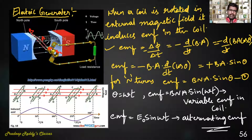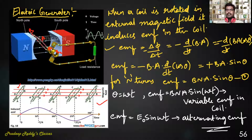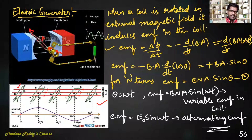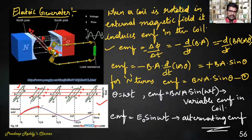You can see how the EMF is induced in the graph. Initially the coil is placed vertically, starting from zero angle, so EMF is zero. When rotated by one quarter, EMF is induced and increases. In the next quarter, side BA comes down and the EMF induced is in the opposite direction, so it decreases.